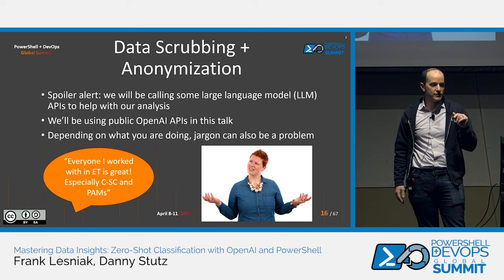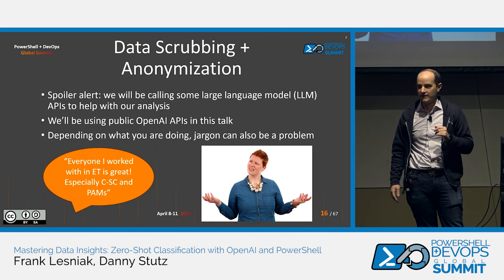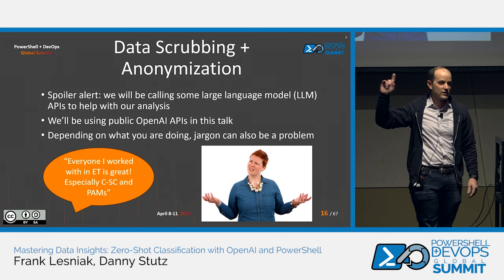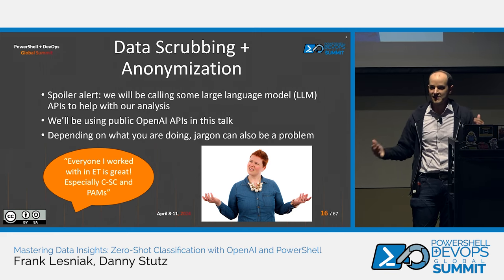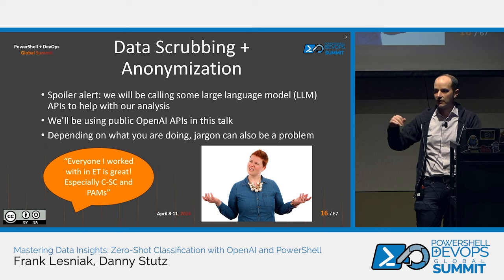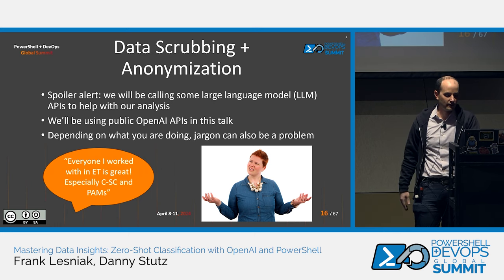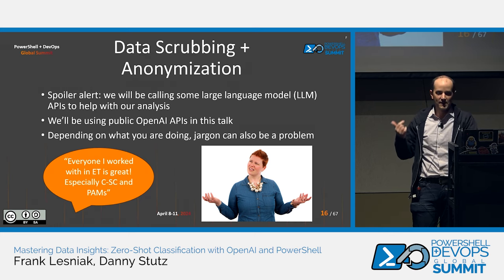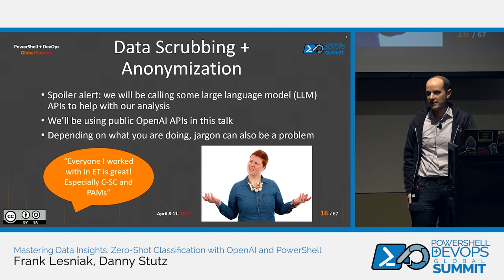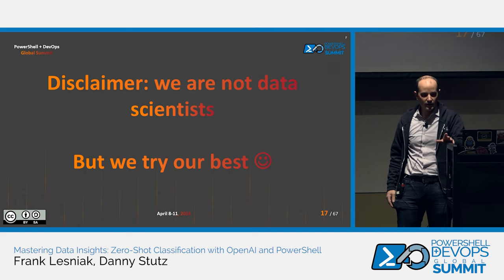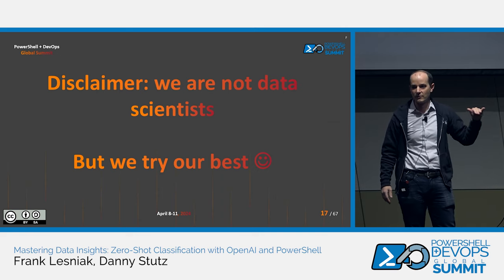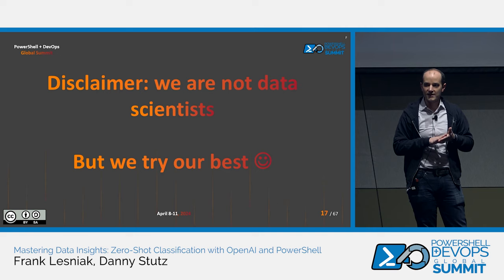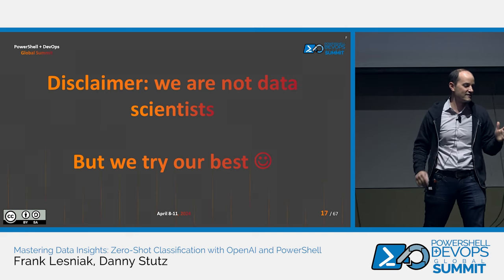We talked about acronyms earlier — depending on what you're doing, jargon can also be an issue. This quote is representative of a real response on an employee engagement survey at West Monroe. This means something to Danny and I, but you all probably have no clue what this means. We'd want to standardize that language or transform it in a way that means something more to the large language model. Really what it's saying is everybody on Danny and my team is great — especially the consultants, senior consultants, and managers. Without going too much further, Danny and I are not data scientists, and we don't have an educational or practitioner background other than preparing for this talk.